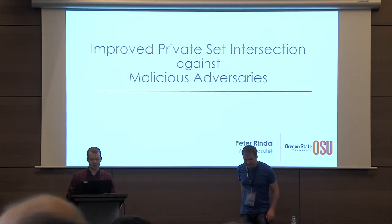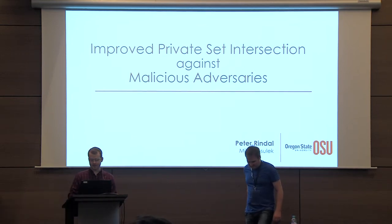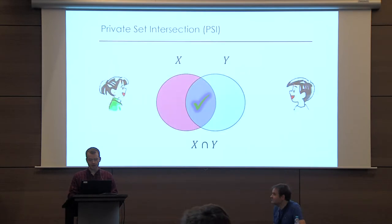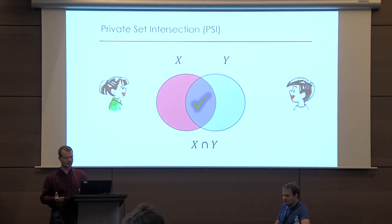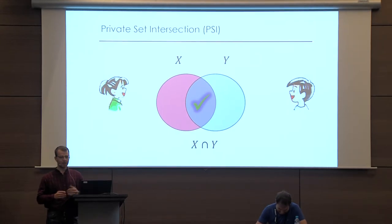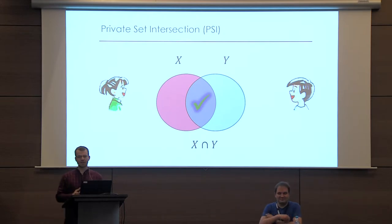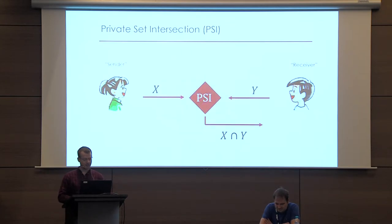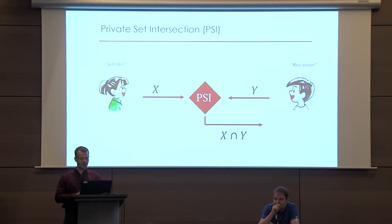Hello, this is joint work with my advisor Mike Rosalek at Oregon State University. Private set intersection refers to this problem of two or more parties, each holding a set which they wish to keep private, but they still wish to learn the intersection of the sets. Throughout this talk I'll use the terminology of a sender and a receiver, and they both provide their sets but only the receiver learns the intersection.